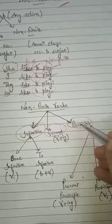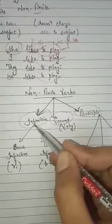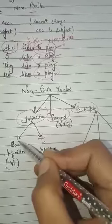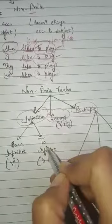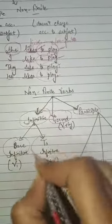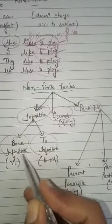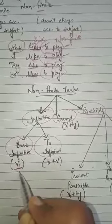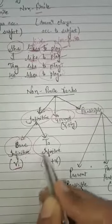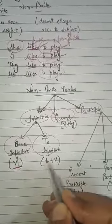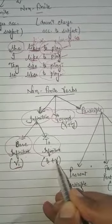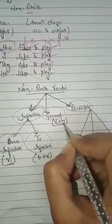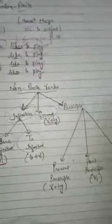Infinitive is of two types: bare infinitive and to-infinitive. In bare infinitive, we use only the first form of the verb. In to-infinitive, we use 'to' plus the first form. For gerund, we always use the first form plus '-ing'.